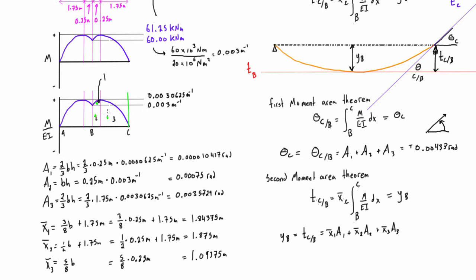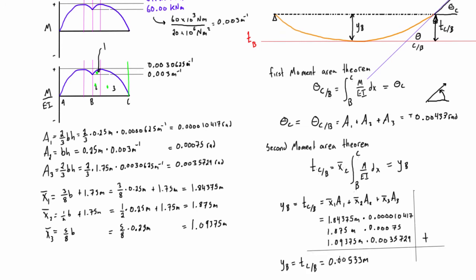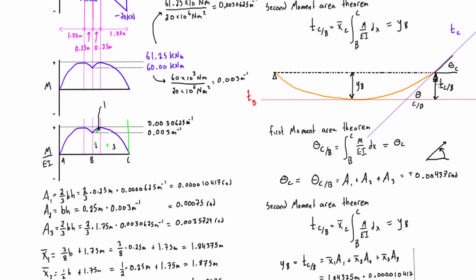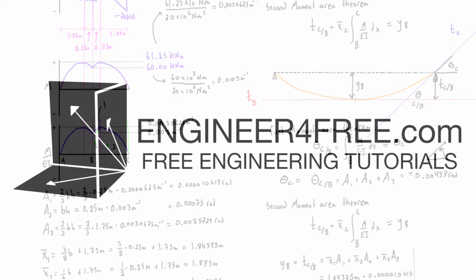Now that we have all centroid distances to point C and their corresponding areas, we tally them up and get 0.00533 meters, which is 5.33 millimeters. This is the tangential deviation of C with respect to B. At the slope-appropriate tangent point at C and the horizontal tangent at B, this distance is 5.33 mm, meaning point C is 5.33 millimeters above the bottom of the deflected curve at the midpoint B. Therefore Y_B equals 5.33 millimeters.